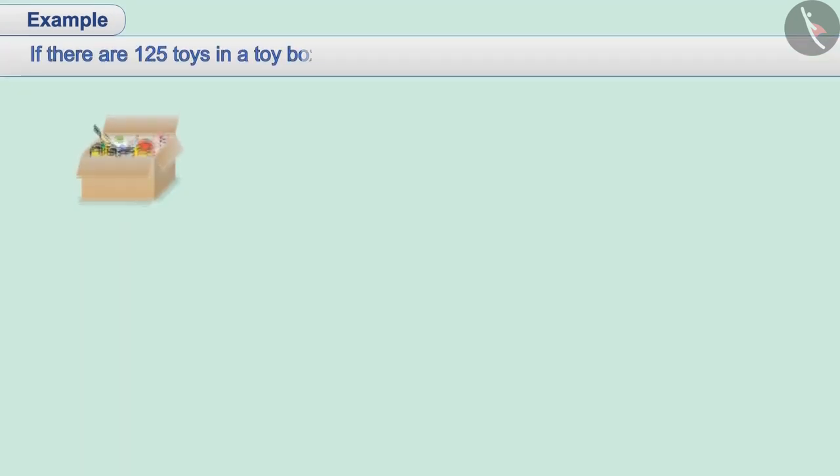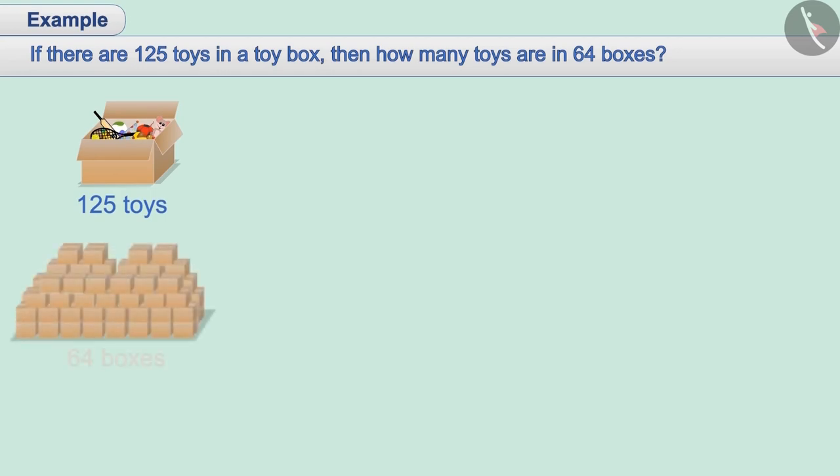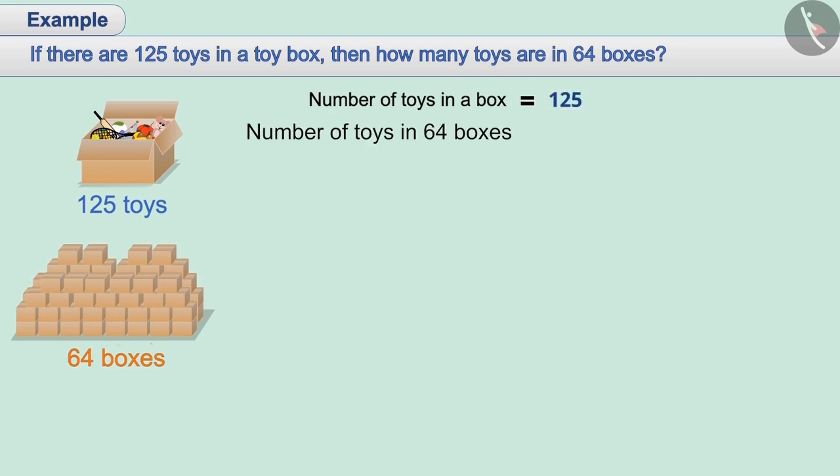Next example: if there are 125 toys in a toy box, then how many toys are there in 64 boxes? Since one box contains 125 toys, the total number of toys in 64 boxes will be 64 multiplied by 125. We can solve this by multiplying both numbers, but it is time consuming.